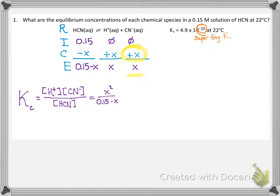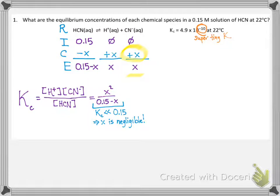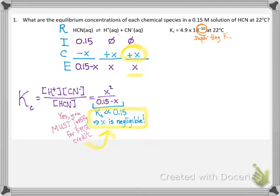On a free response problem, to make the x is negligible approximation, you do need to justify. Luckily, the justification is really easy — you look at the subtraction, 0.15 minus x, and say the equilibrium constant is so much smaller than that starting concentration of 0.15, so x is negligible. You're not allowed to just do the next mathematical step without explaining what you're doing. Here's the magic shortcut: we know 0.15 minus x is basically just 0.15, so we rewrite the expression getting rid of x in the denominator.